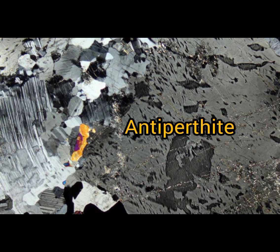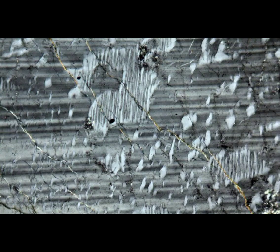Where both perthite and anti-perthite are present in equal portions, we call it mesoperthite.